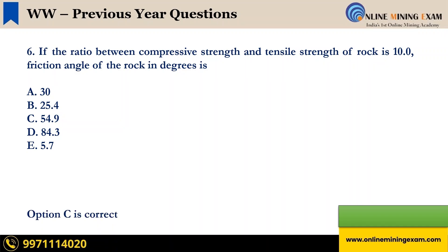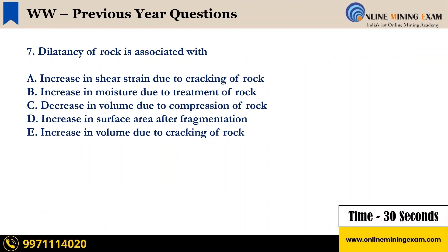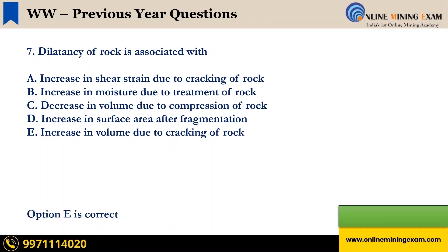Time up. The correct answer is C: 54.9 degree. Next question. Dilatancy of rock is associated with — A: increase in shear strain due to cracking of rock, B: increase in moisture due to treatment of rock, C: decrease in volume due to compression of rock, D: increase in surface area after fragmentation, E: increase in volume due to cracking of rock. Your time starts now. Time up. The correct answer is E: increase in volume due to cracking of rock.